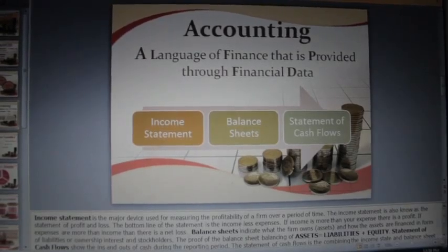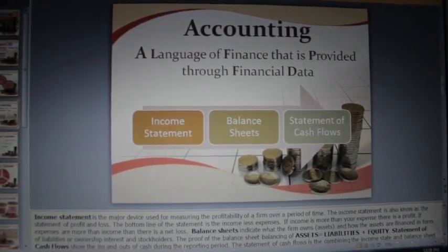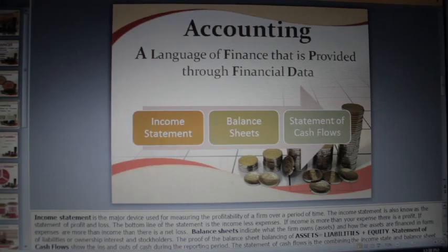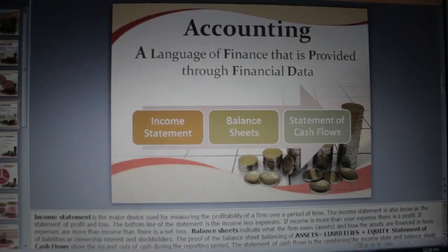The income statement is the major device used for measuring the profitability of a firm over a period of time. The income statement is also known as the statement of profit and loss. The bottom line of the statement is income less expenses. If income is more than your expense, there is a profit. If expenses are more than income, then there is a net loss.